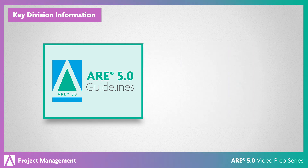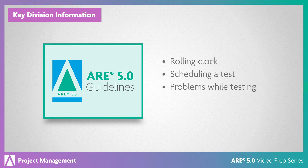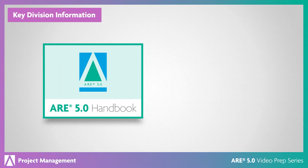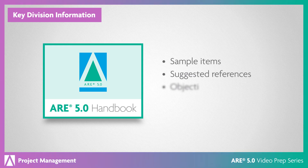The guidelines contain critical information about ARE 5.0 policies, including the rolling clock, scheduling a test, problems while testing, and receiving your score. The handbook discusses the content of all six divisions and includes sample items and suggested references, as well as more information on the objectives for each division.